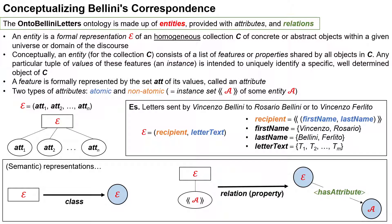For example, consider the collection of letters sent by Vincenzo Bellini to his father Rosario Bellini or to his uncle Vincenzo Ferrito, where each letter is characterized only by its recipient and its written text, and the recipient is in turn a person characterized only by first and last names. This can be conceptualized as an entity consisting of two attributes: recipient and letter text. The recipient attribute is a non-atomic attribute, as it corresponds to the entity consisting of the two atomic attributes, first name and last name. Within the ontology, entities correspond to ontology classes, and the relation linking an attribute to its holding entity is implemented by means of an object property.